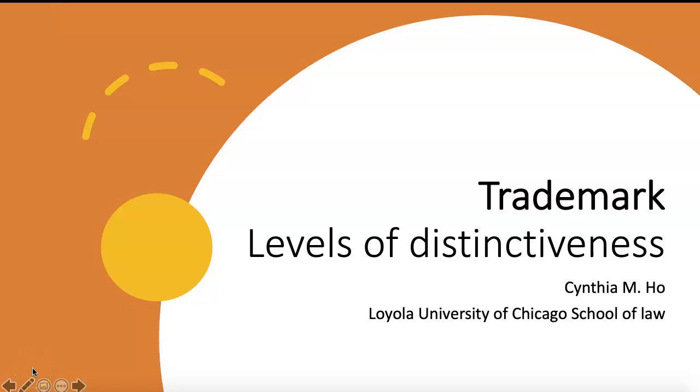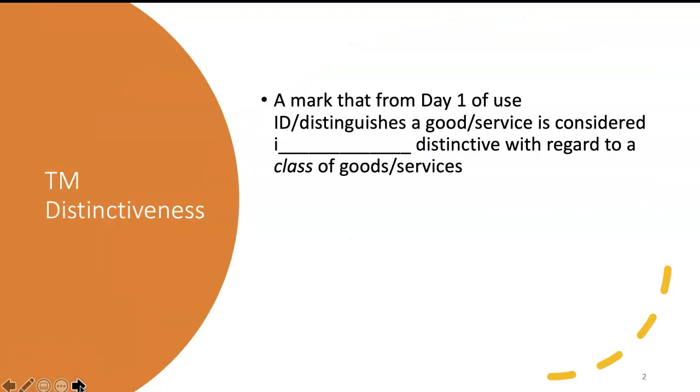Let's talk a little bit about levels of distinctiveness in U.S. trademark law. A mark that from the very first day of use serves to identify and distinguish a good and service from others is called inherently distinctive with regard to a specific class of goods or services. Honda, from day one, is inherently distinctive because nobody would be confused thinking that it was anything other than a brand name for a car.